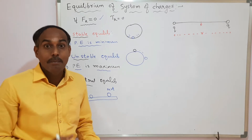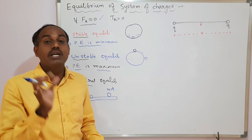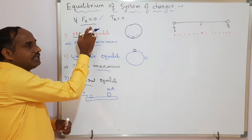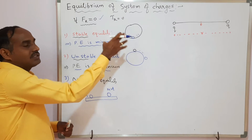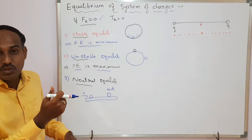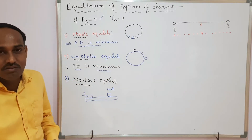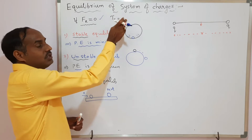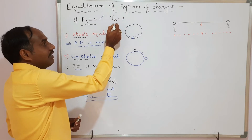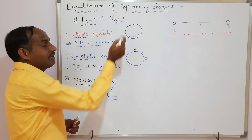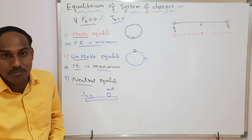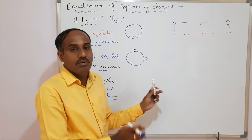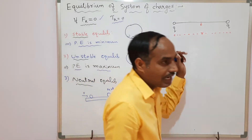Internal forces may be present, but considering the net force: when the resultant or net force on the body is zero, it is said to be in equilibrium — specifically translational equilibrium. When the net torque is zero, it comes under rotational equilibrium. Now we move to the equilibrium of a system of charges.